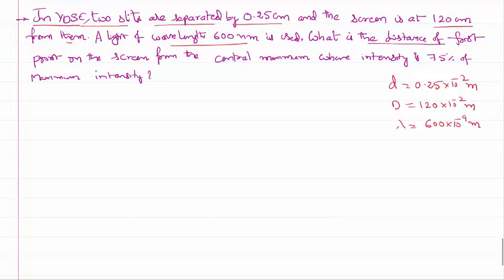What is the distance of the first point on the screen? What's the value of Y from the central maximum where intensity is 75% of the maximum intensity?